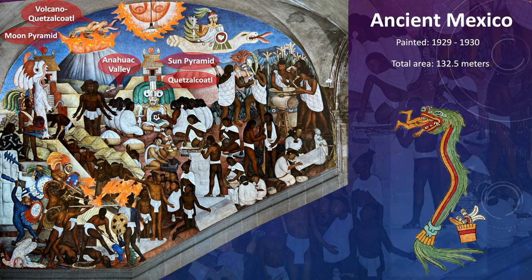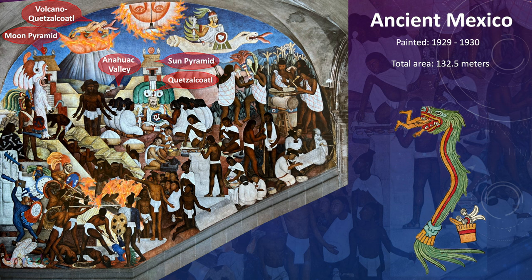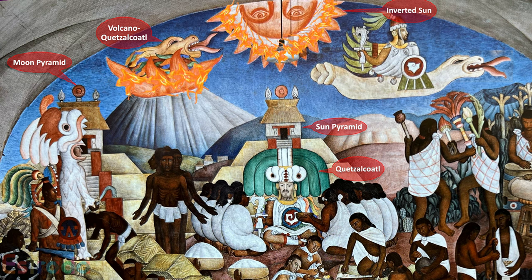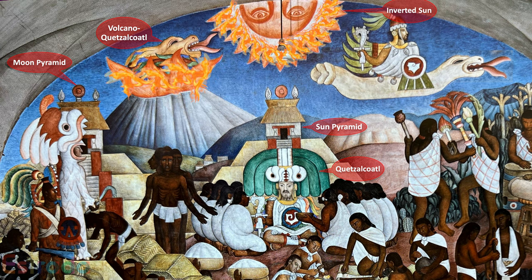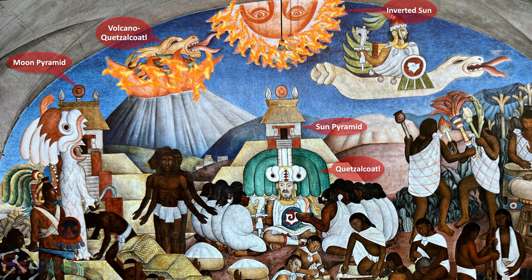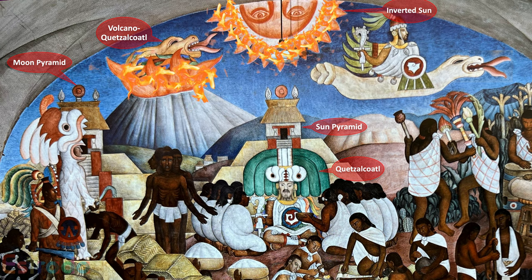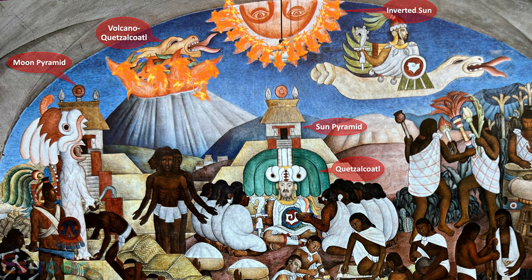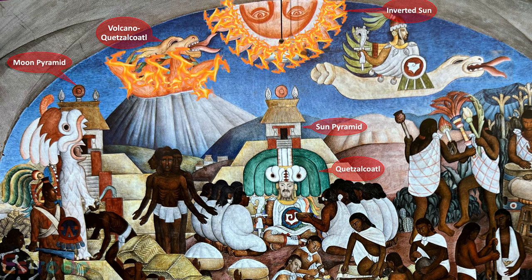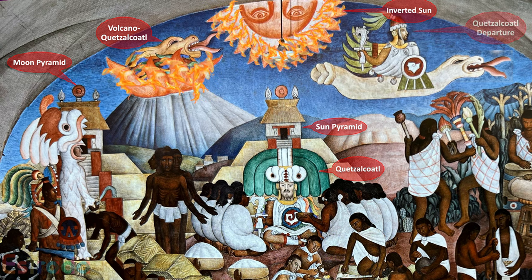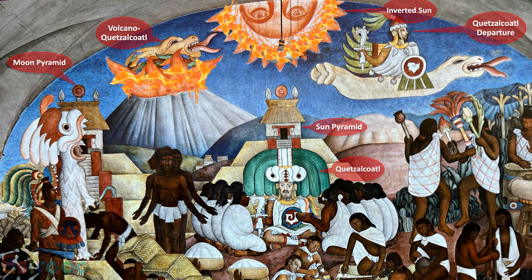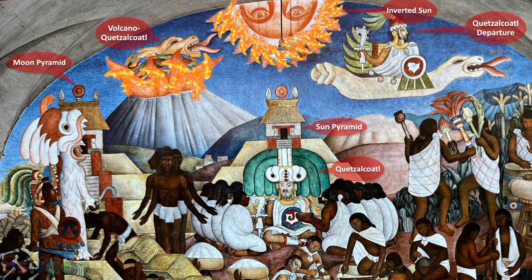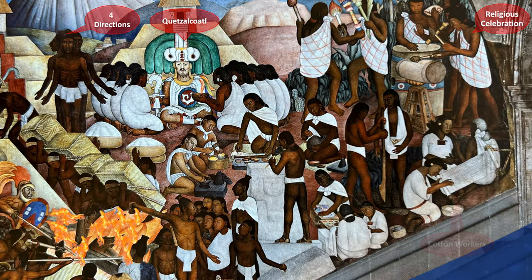In the top left, the head of the plumed serpent Quetzalcoatl is erupting from the volcano — likely a reference to when Quetzalcoatl immolated himself. The inverted sun represents the premonition of ancient Mexico's destruction, and native sources suggest they knew of their eventual destruction. There is also Quetzalcoatl's departure: after being disgraced while drunk, he transformed into the star or planet Venus.